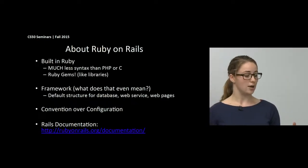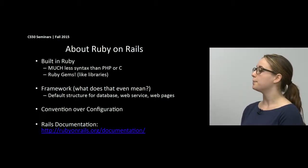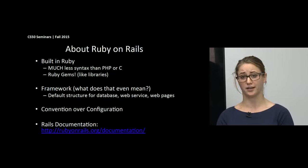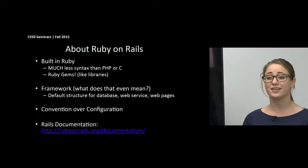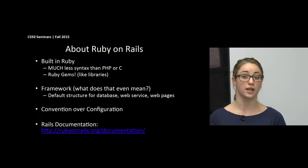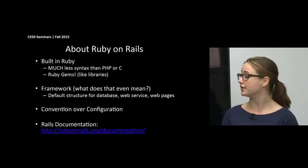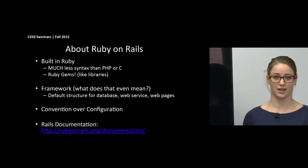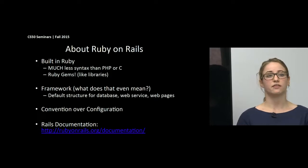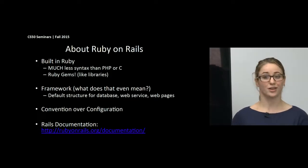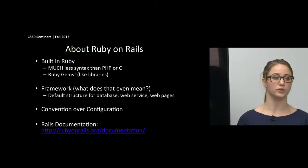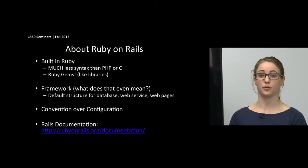Now that we have that MVC framework in mind, let's talk about Ruby on Rails. Ruby the language has a lot less syntax than PHP or C — fewer semicolons, fewer curly braces, which makes it nicer to work with. It reads more like English. Ruby also has fun features called gems, which you can think of like libraries in C — the things you include with hash-include at the top of your files. There are Ruby gems for just about everything. It's a well-documented language with lots of people working on it, so if you want to implement a cool feature, try Googling — there'll probably be a library with pre-built functions that make it easier.